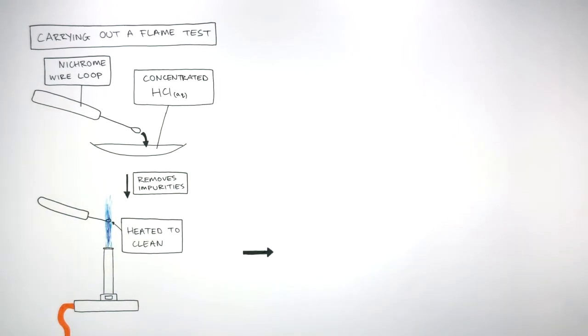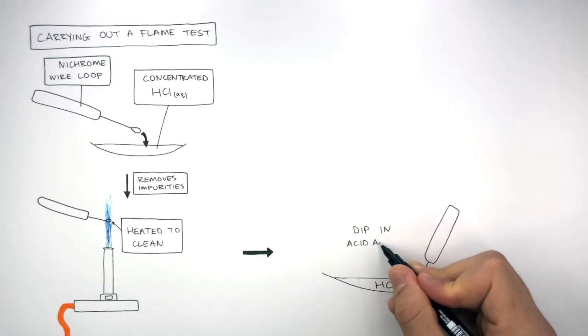The nichrome wire loop is then dipped into the concentrated hydrochloric acid again.